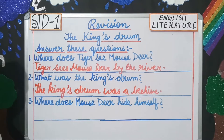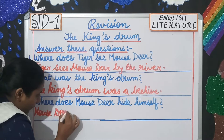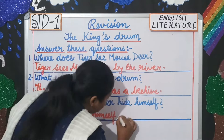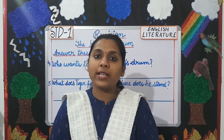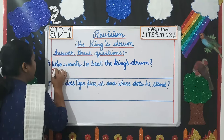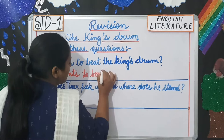Next question: where does mouse deer hide himself? You will write, 'Mouse deer hides himself behind the bushes.' Moving on to question number four: who wants to beat the king's drum? Tiger. So you will write, 'Tiger wants to beat the king's drum.'